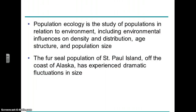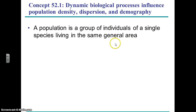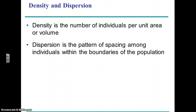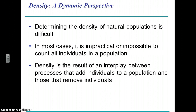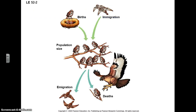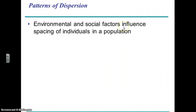With population ecology, we're focusing on a particular species occupying a particular space, and we can characterize a population by density or dispersion — how they're distributed across the landscape. Density is going to be a function of these things: birth and immigration will add to the population, while emigration and death will take away, so these things together determine the size and density of the population.